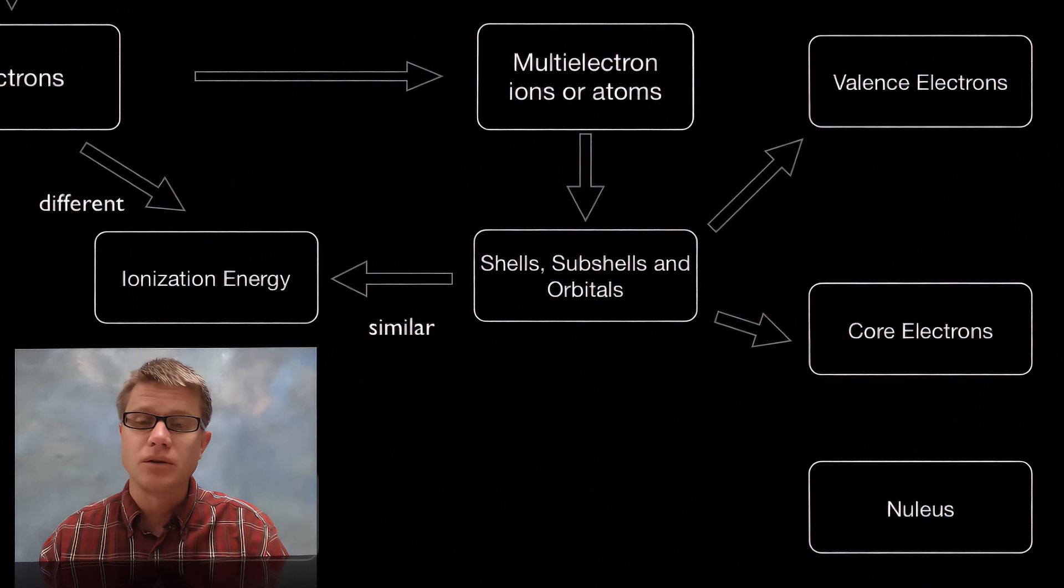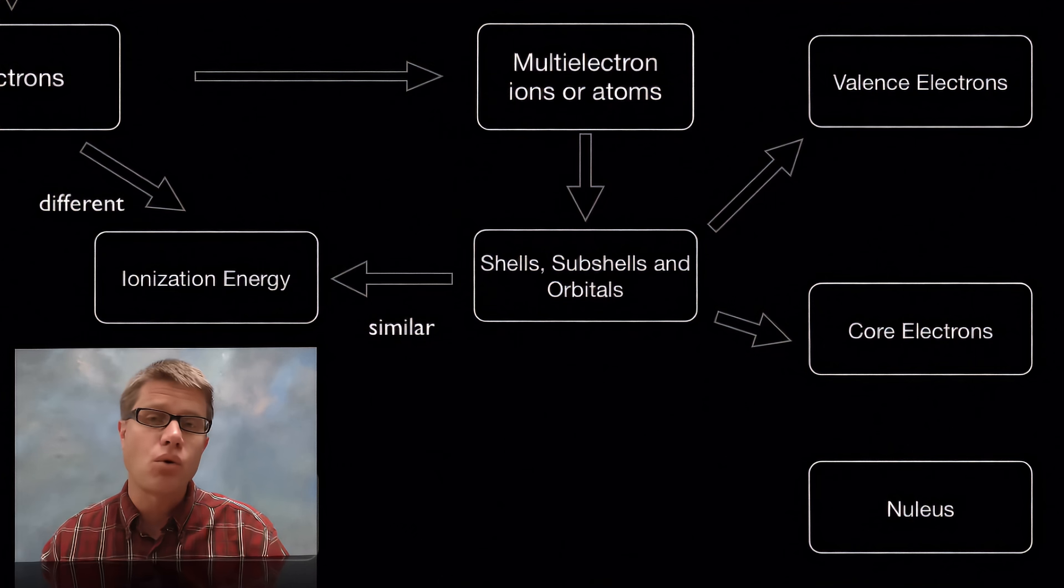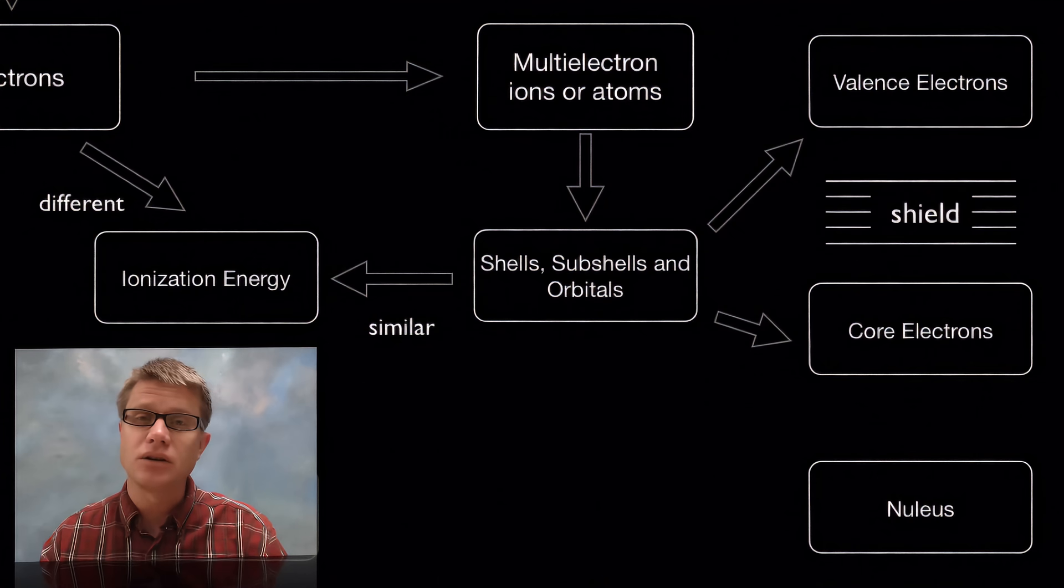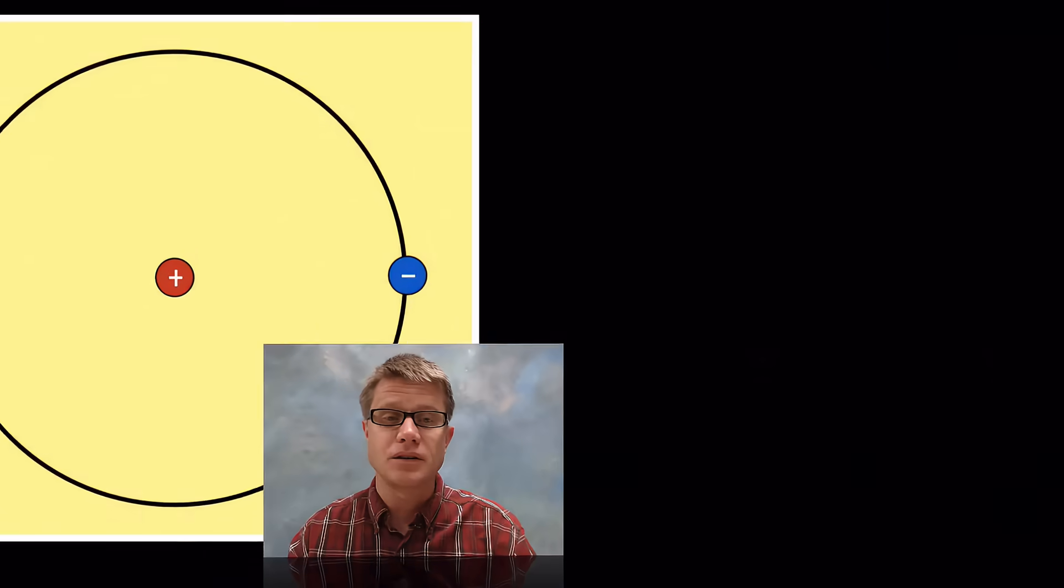Now if we look at these orbitals and subshells what we'll find is that the inner electrons are going to be called core electrons. And the ones on the outside are going to be called valence electrons. And what's interesting is that those on the inside once they're filled will actually shield the valence electrons from the power of the nucleus itself.